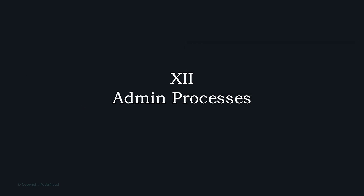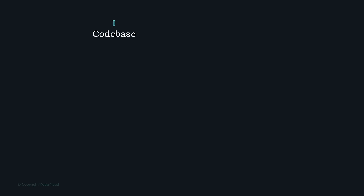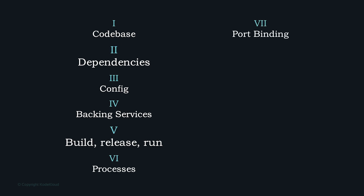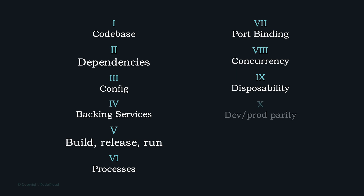Admin processes should be run in an identical setup and be automated, scalable, and reproducible. To summarize all 12 factors: one codebase; explicitly declare and isolate dependencies; store config in the environment; treat backing services as attached resources; strictly separate build and run stages; execute as stateless processes; export services via port binding; scale out by the process model; maximize robustness with fast startup and graceful shutdown; keep dev/staging/prod as similar as possible; treat logs as event streams; and run admin tasks as one-off processes.